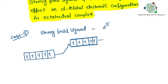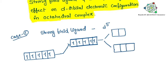Moving to the next step: when ligands come closer, the d-orbital degeneracy is lost and they split into two parts. One part is Eg and the other is T2g. The Eg orbitals include the dx²−y² and dz² orbitals, while T2g contains the remaining three. We simply call them Eg and T2g.